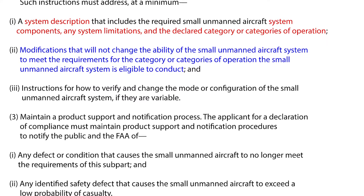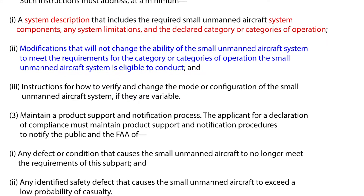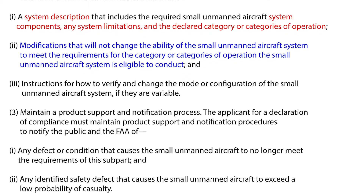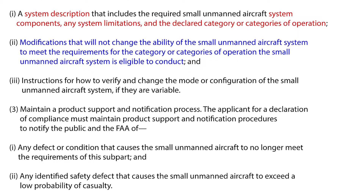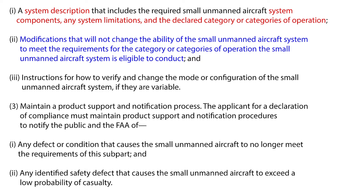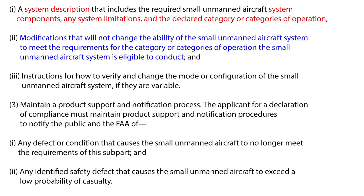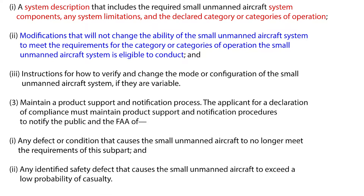You have to maintain a product support and notification process. The applicant for a declaration of compliance must maintain product support and notification procedures to notify the public and the FAA of any defect or condition that causes the small unmanned aircraft to no longer meet these requirements or any identified safety defect. Note: these were not on the test, just an FYI.